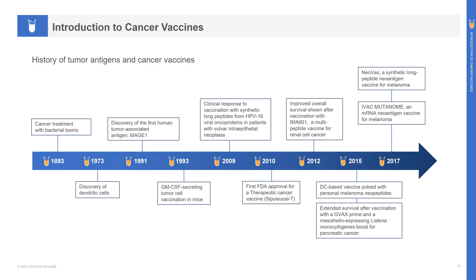The concept that tumors express specific antigens that could render them naturally immunogenic with the provision of adequate immunostimulation was supported by the pioneering work of William Coley in the 1890s. Repeated injections of erysipelas led to tumor regression in a patient with advanced sarcoma. This early work shows the potential for exogenously administered components to stimulate the immune response to achieve clinically evident tumor regression.